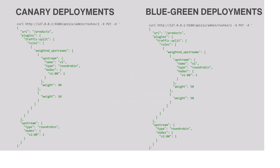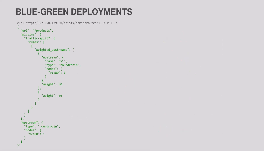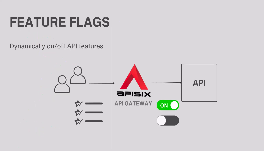With APISIX, you can achieve canary routing through the traffic split plugin. The example shows how you can configure that plugin on a specific route. You can also apply a similar strategy like blue-green deployments, where half of the traffic is routed to one API version and the other half to the new API version, using the same traffic split plugin.